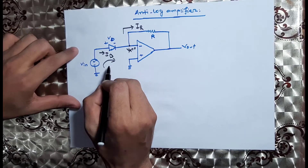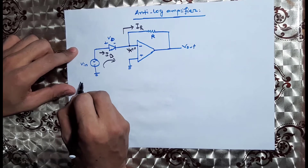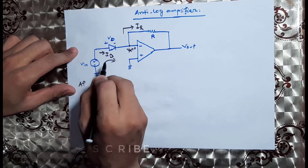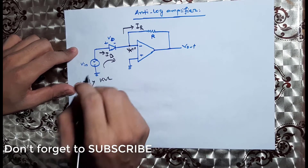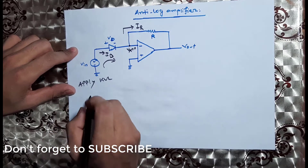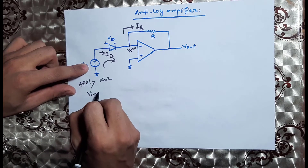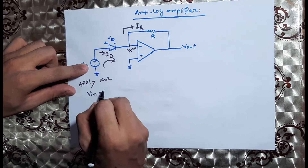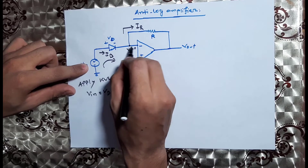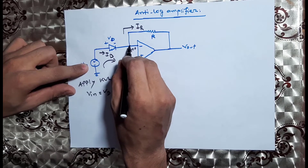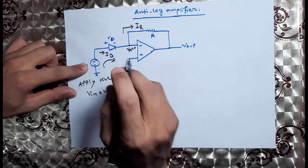We will apply KVL around this loop. Applying KVL, we will see that Vin is equal to Vd. So Vx is equal to 0 — this node is at potential 0.